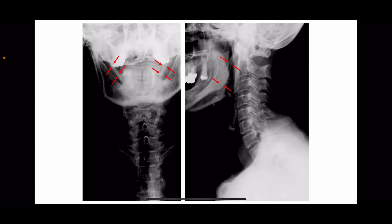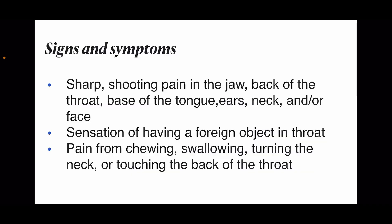The cause of the elongation is not clear. It could occur spontaneously or could arise since birth. Normally, the styloid process is 2.5 to 3 centimeters in length, and longer than 3 centimeters is classified as an elongated styloid process, leading to signs and symptoms, which is called Eagle Syndrome.